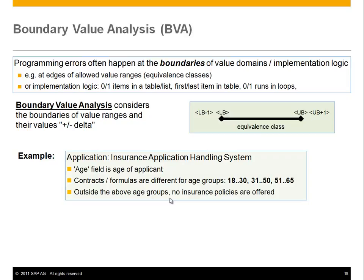In the previous case it was the integer range, but more typically the important boundaries are equivalence classes, or even implementation logic boundaries such as an empty list, a fall-through on a loop, or where the first or last item in a table is handled. Boundary cases in program logic are the most error-prone of all places.